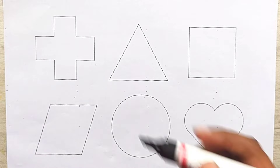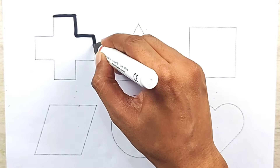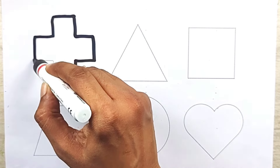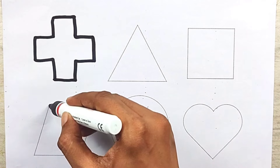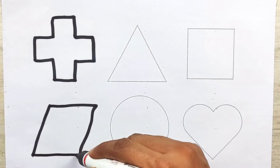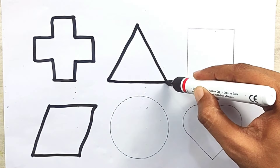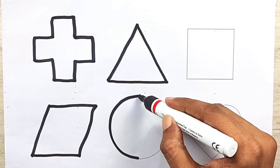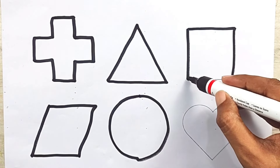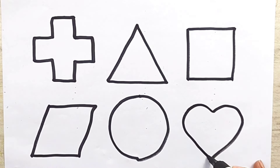Let's make the shape. This is a cross, parallelogram, triangle, circle, square, heart.